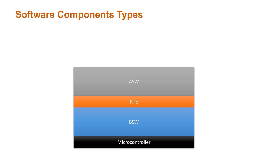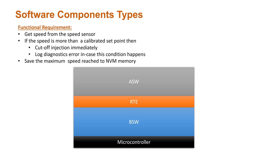With all the information obtained about software components, we shall look into a practical example to understand how to use the software component types. The requirement goes like this: we have to get vehicle speed from an external speed sensor. If the speed is more than the calibrated setpoint, then the following actions should be taken: cut off the injector immediately and stop the vehicle, and log an error through the diagnostic module.